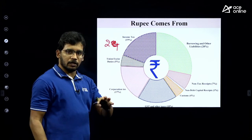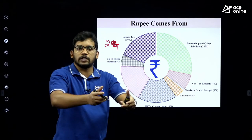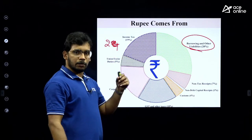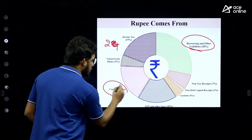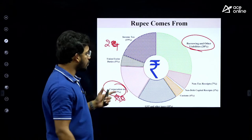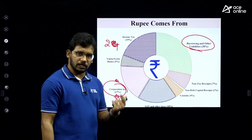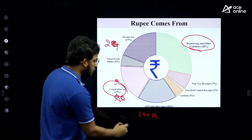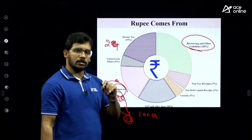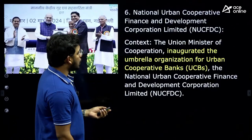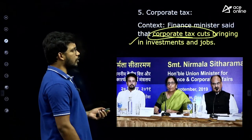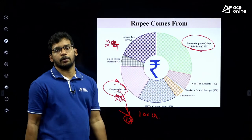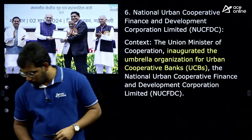In the 2024 budget, the total amount government receives: 28% is from borrowings and liabilities, and corporate tax contributes 17% of total government receipts. So out of every 100 crores the government receives in a year, 17 crores is from corporate tax. That is about the contribution of corporate tax to government revenue. We have discussed what corporate tax is, its features, existing conditions, and its contribution to government income.